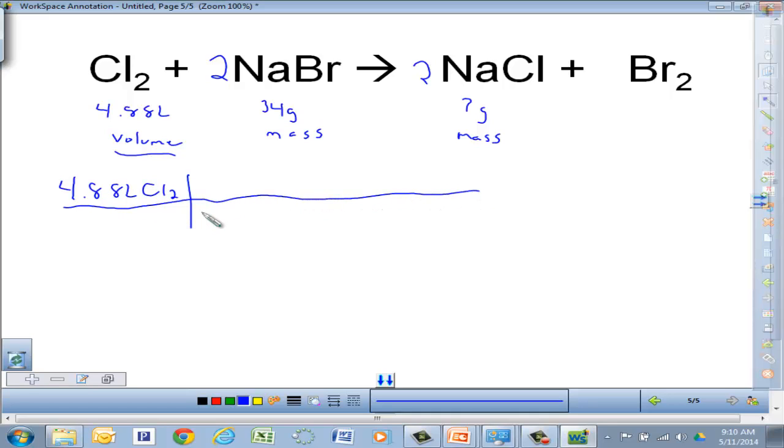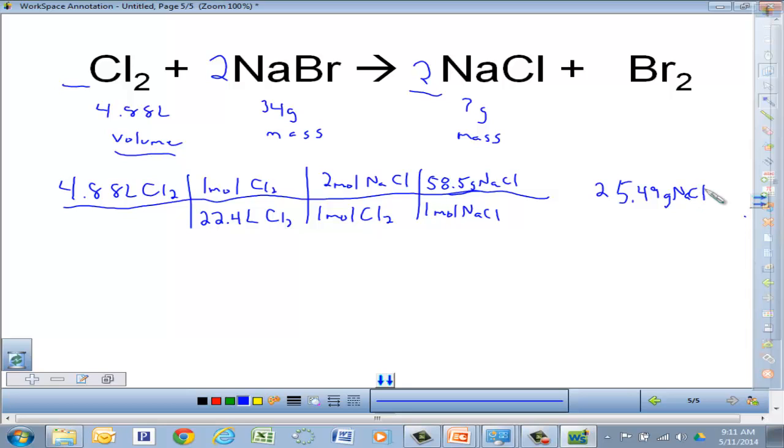And again, this problem said STP, so I can use that 22.4 liters of Cl2 is equal to 1 mole of Cl2. Now, my mole to mole ratio for chlorine and sodium chloride, 1 mole of Cl2 is going to be 2 moles of sodium chloride. And then finally, because that says grams, I'm going to say 1 mole of NaCl. I have to add up NaCl. Na is 23, Cl is 35.5, so I've got 58.5 grams of NaCl. When I run that through my calculator, I end up with 25.49 grams of NaCl. Okay, that's one of them.